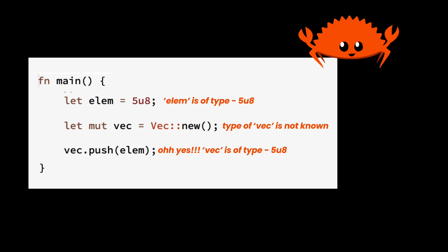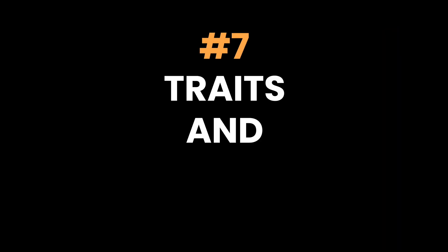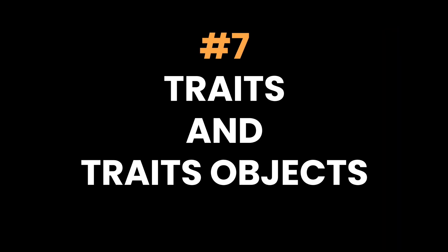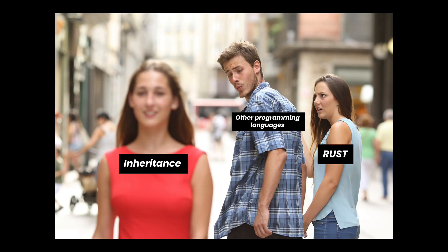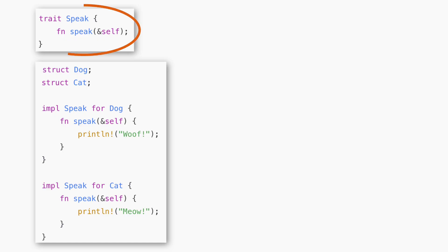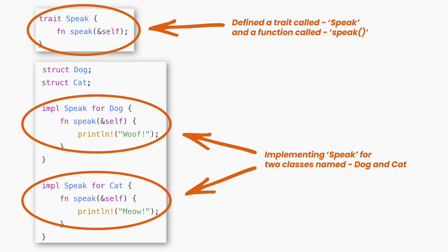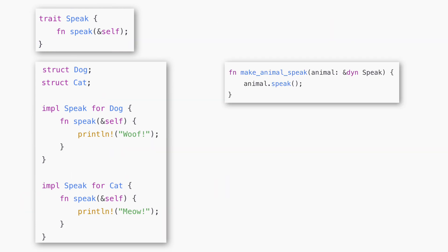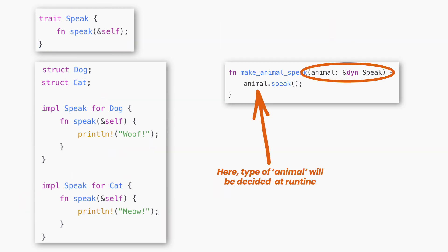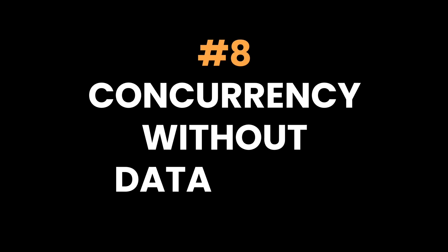Seven: traits and trait objects. Rust doesn't have inheritance like traditional object-oriented languages. Instead, it uses traits to define shared behavior. This allows us to implement behavior across different types without a complex inheritance chain. Trait objects like dyn Trait also allow for dynamic dispatch, giving flexibility for polymorphic behavior.